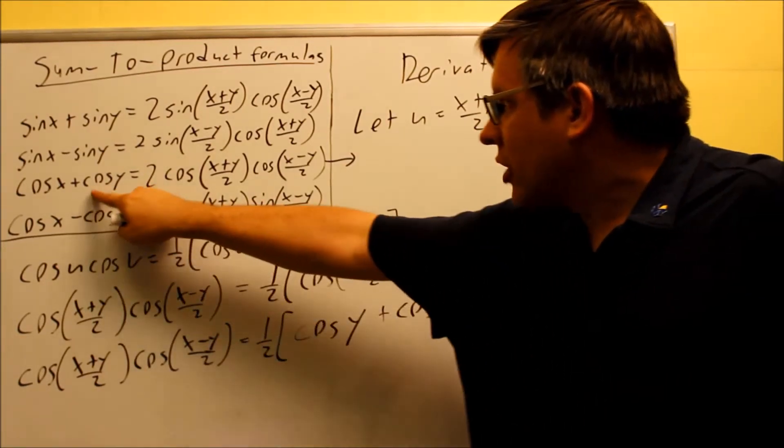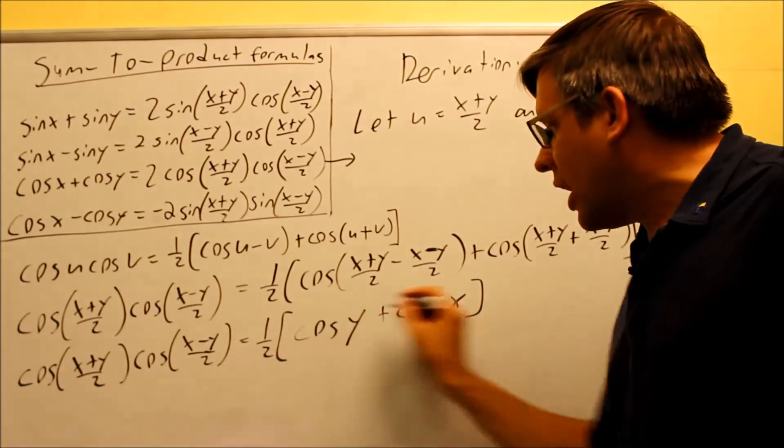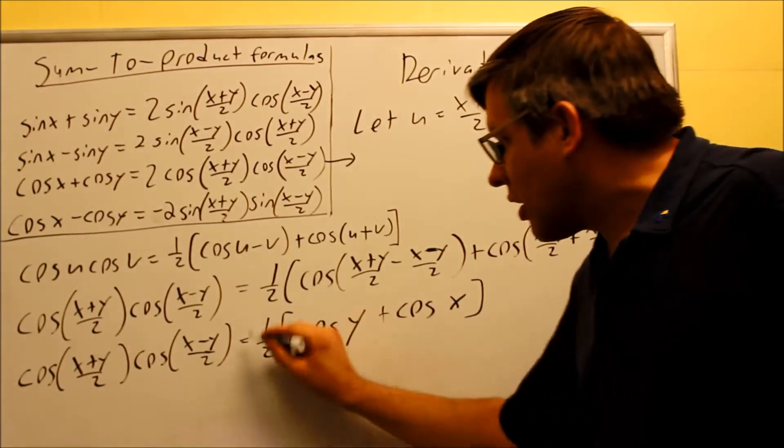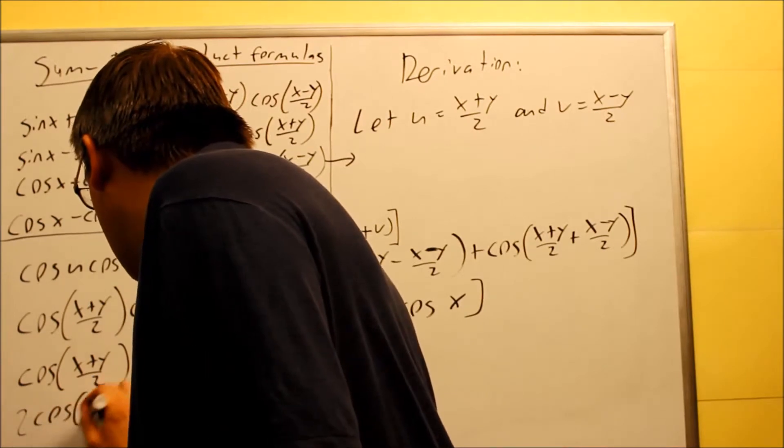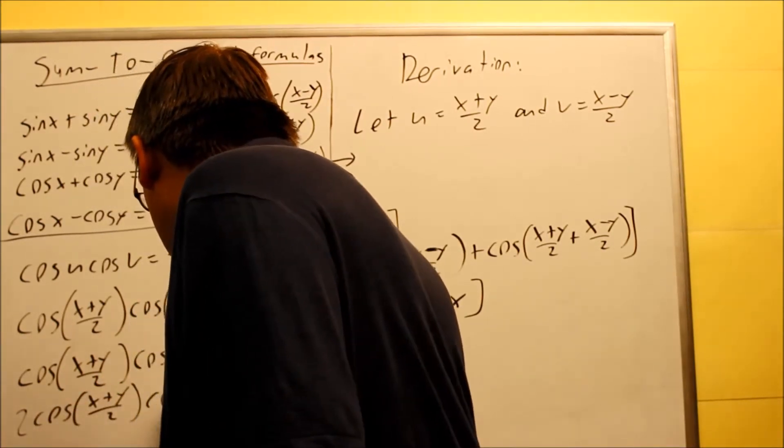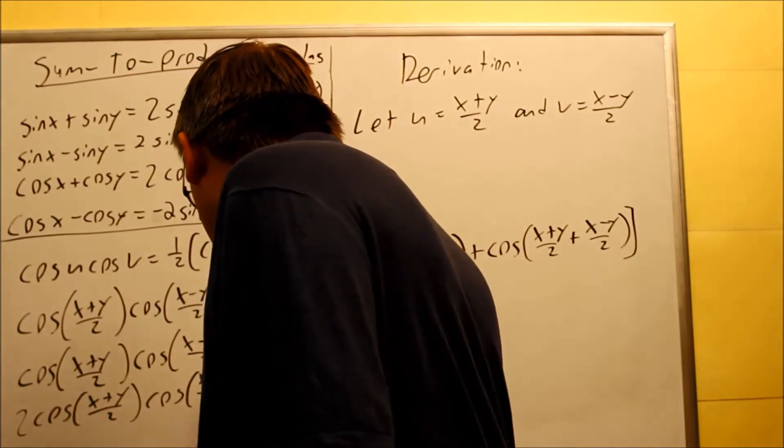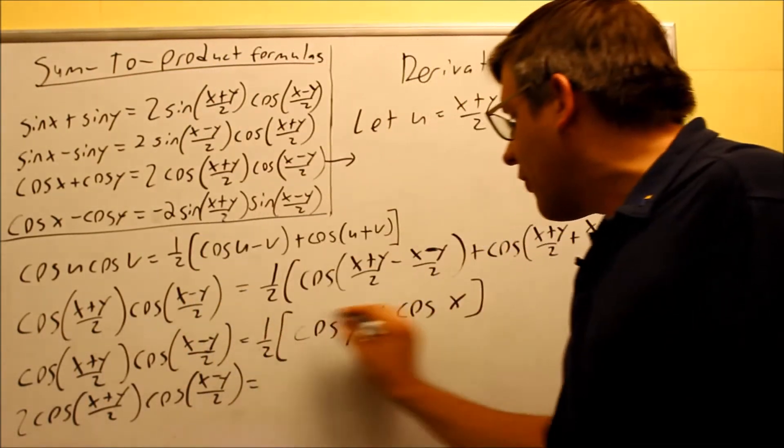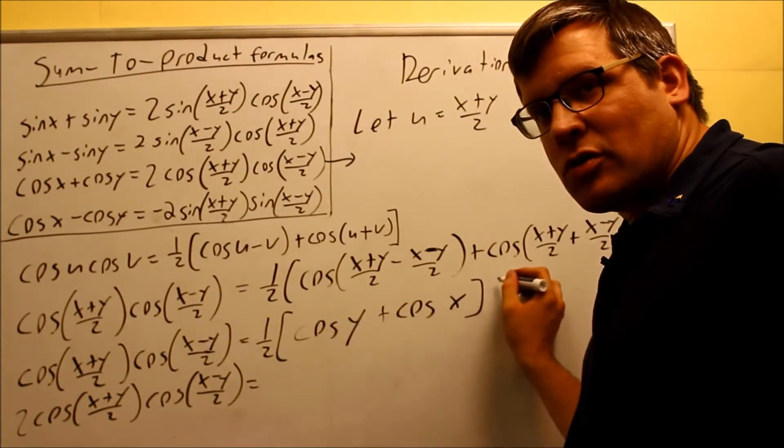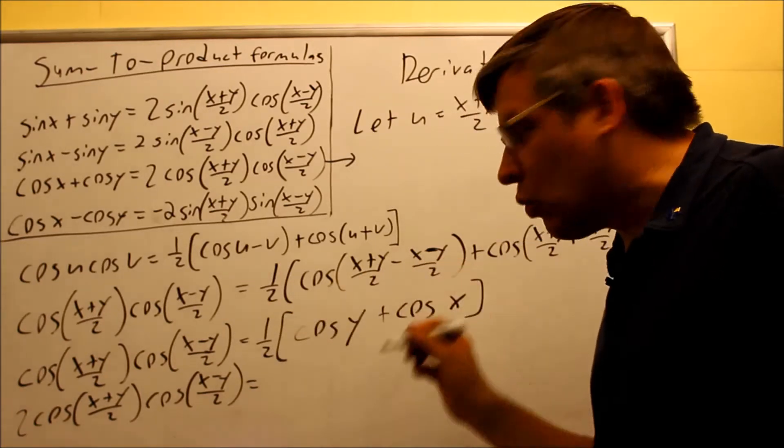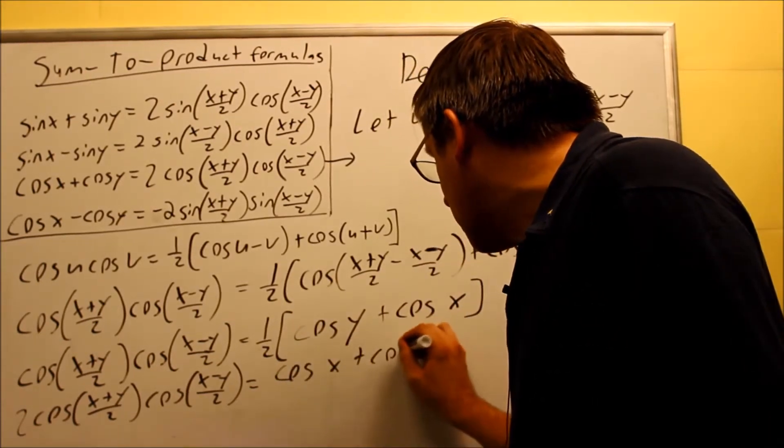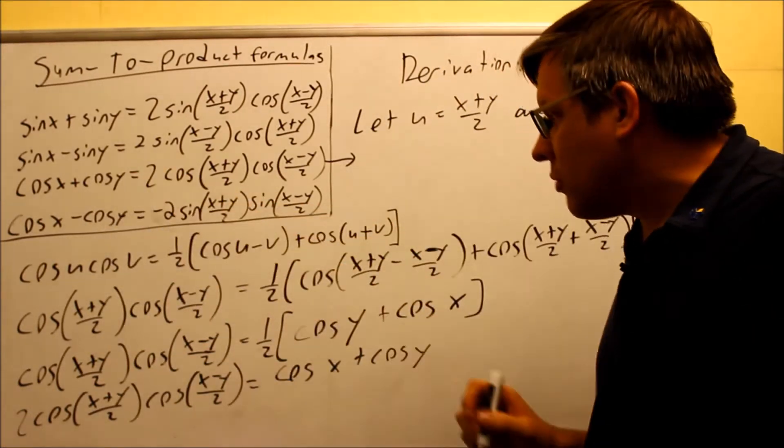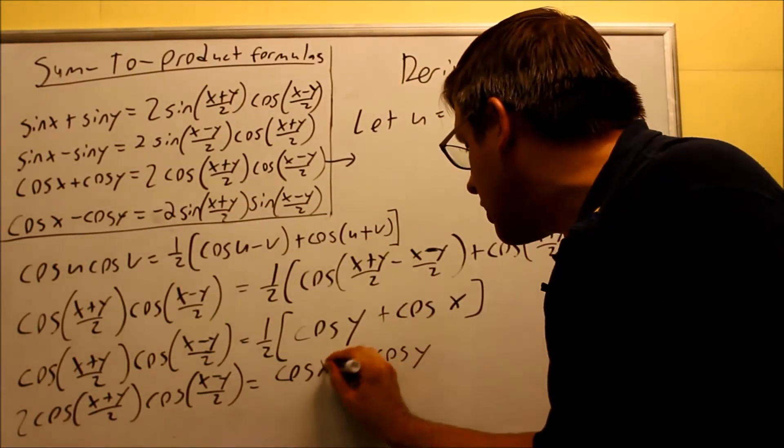Okay, so I'm almost there. All I have to do now to make it look like this side is I need to multiply both sides by 2, so I can clear out the fraction that's there. So then I get 2 cosine x plus y over 2, cosine x minus y over 2. And then the 1 half is gone, because I'm multiplying both sides by 2, so 2 times a half is 1. So I just get cosine y plus cosine x.